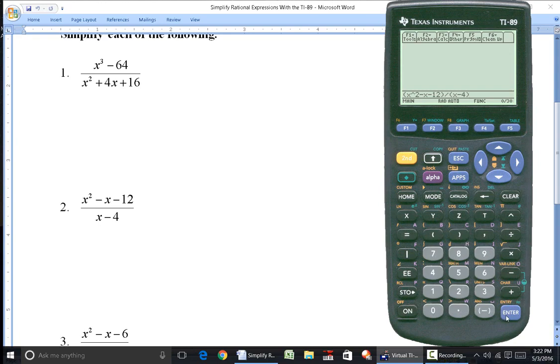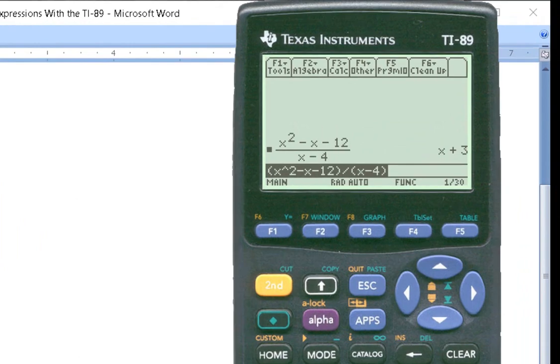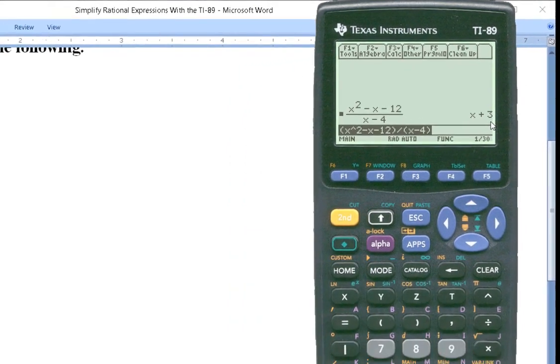And notice if I hit enter, I get x plus 3. So the numerator is a trinomial. I could factor that into x plus 3 times x minus 4. So the factors of the numerator are x plus 3 and x minus 4, but the x minus 4 on top cancels with the x minus 4 on the bottom.